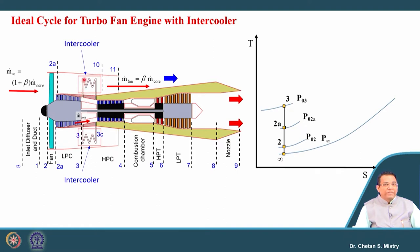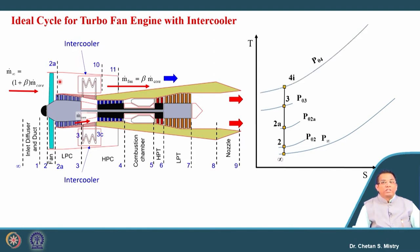We are permitting the air to pass through the intercooler device. Because of compression, our temperature and pressure will be higher. We will be trying to cool down the high-temperature air coming out of the LP compressor by using the bypass air. Process 3 to 4i represents the ideal process without the intercooler. If we incorporate the intercooler, the process from 3 to 3c represents the cooling process, happening ideally at constant pressure.